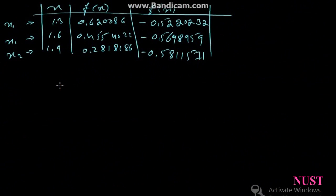Hi, welcome to Maths and Tricks. Today I will show you the Hermite interpolation with the help of an example. The given example is where x0 is 1.3, x1 is 1.6, x2 is 1.9.